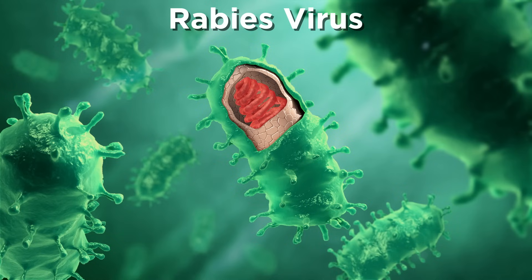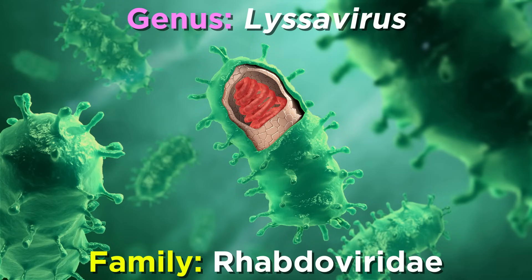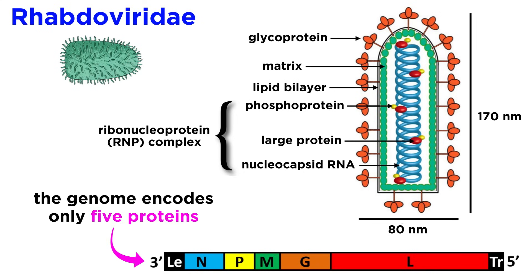So let's dive into what makes this virus so deadly. The rabies virus belongs to the genus Lysavirus in the rhabdoviridae family, which includes a few other pathogens, but nothing quite as terrifying as rabies. Rhabdoviruses are surprisingly simple viruses that encode only five proteins, and they appear as bullet-shaped, enveloped virions with glycoprotein spikes on the surface.